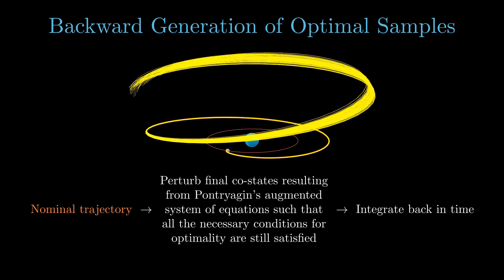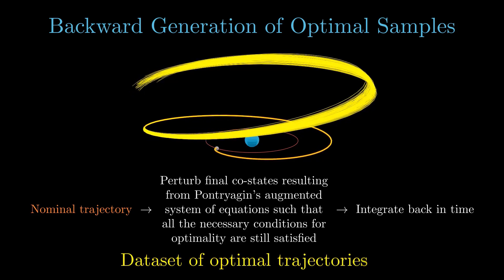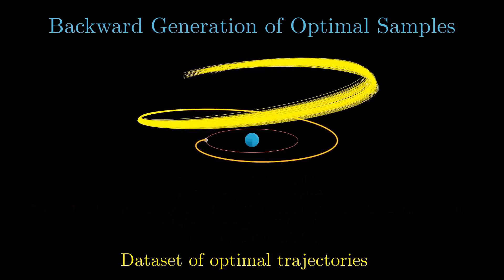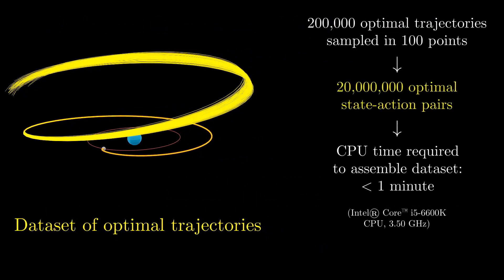This process is orders of magnitude faster than solving two-point boundary value problems from different initial conditions. In fact, the training dataset used for the policy network in our work was generated under one minute on a standard CPU and contains 20 million state-action pairs to learn from.